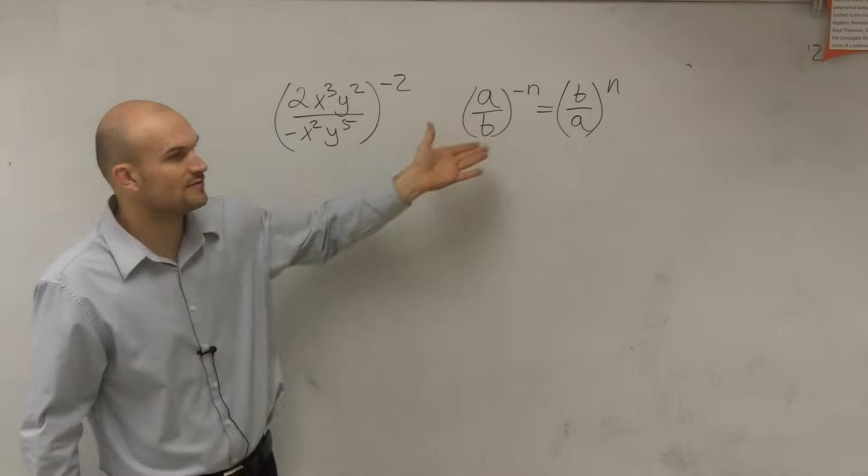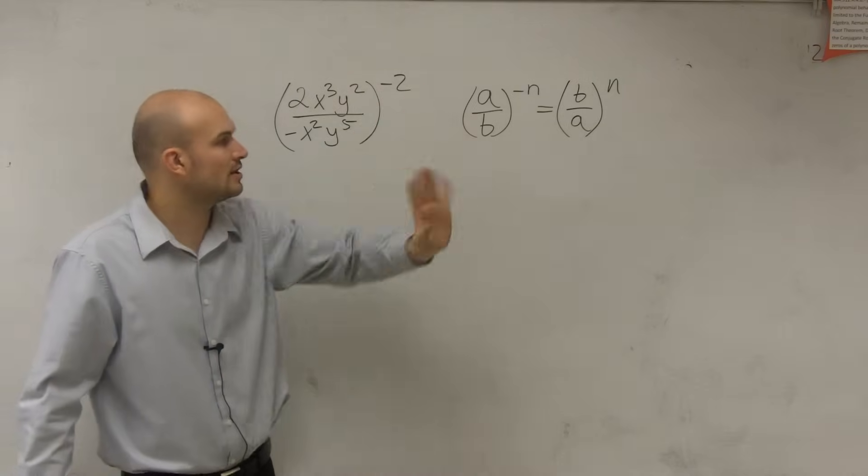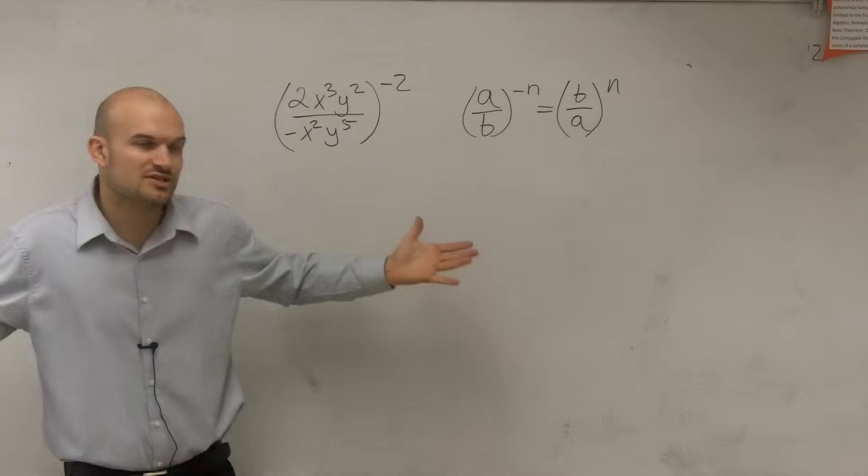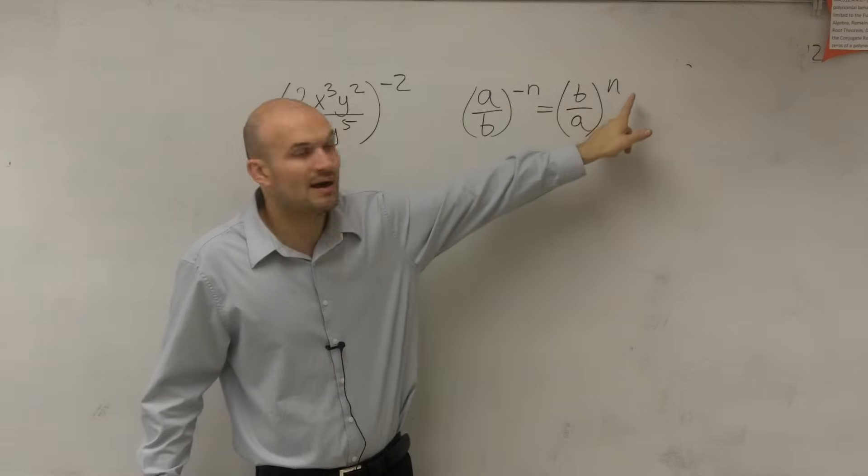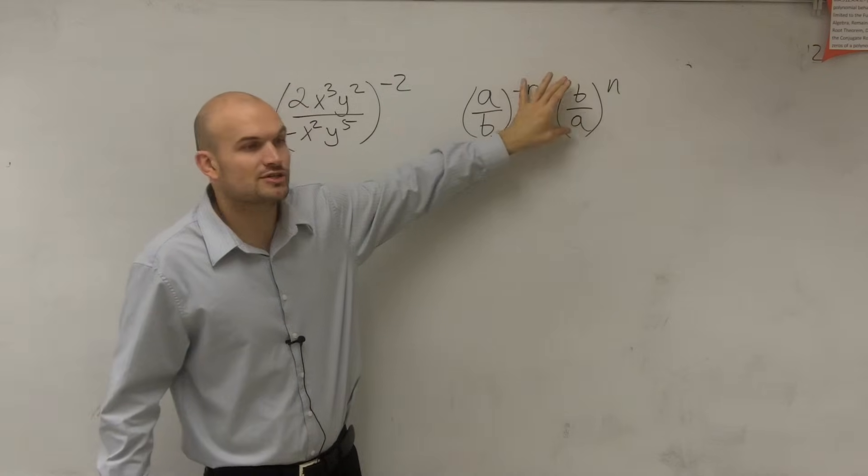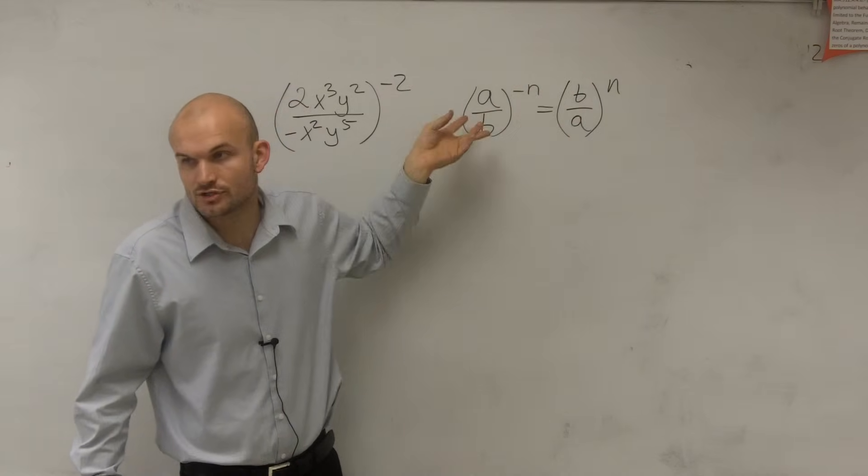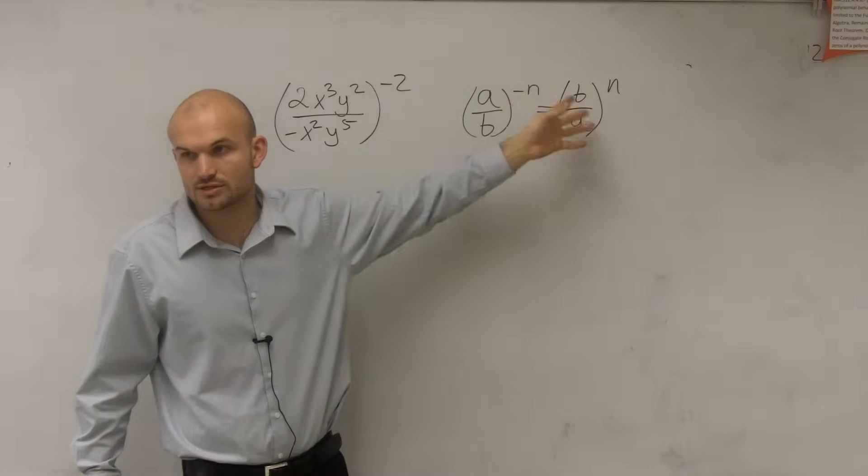And there's a reason why, because if you put that under 1, I can go through the whole explanation. But just so you understand, if you have a divided by b raised to a negative exponent, to make that exponent positive, you just need to make sure you're dealing with the reciprocal of your term. Do you guys see how that kind of works?